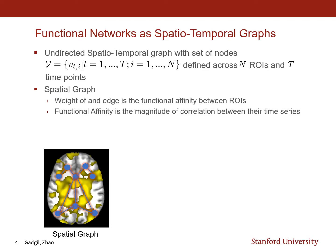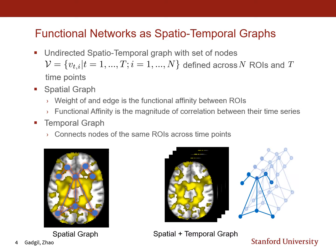The functional affinity is the magnitude of correlation between the concatenated time series across all subjects. In order to construct the temporal graph, the spatial graph is copied across time and the nodes of the same ROI are connected across the time points. Doing this, we get a spatial plus temporal graph as shown in the bottom right figure.